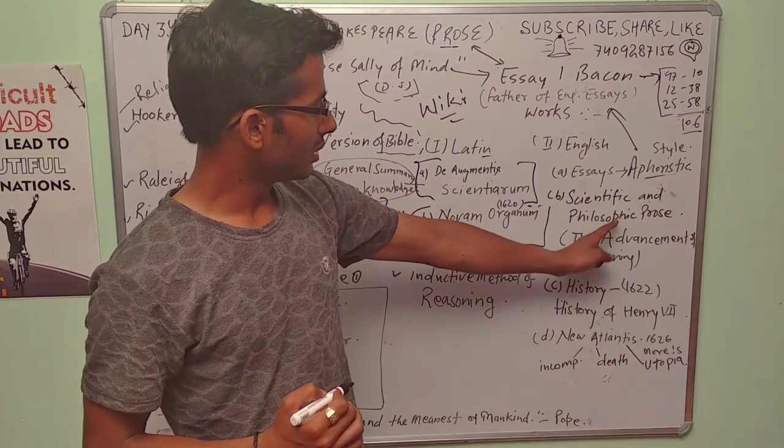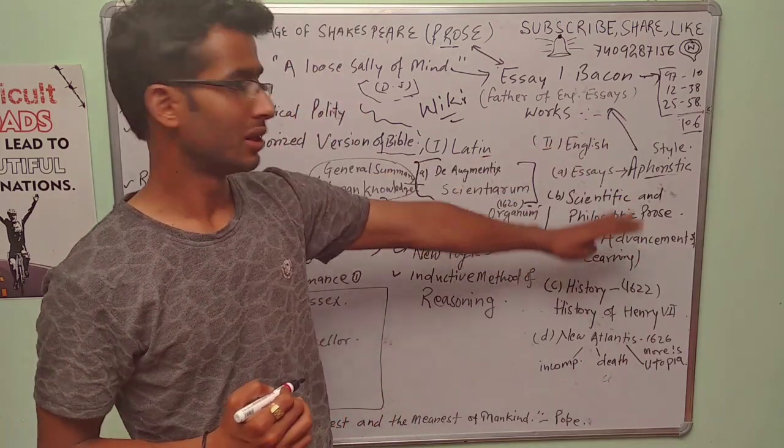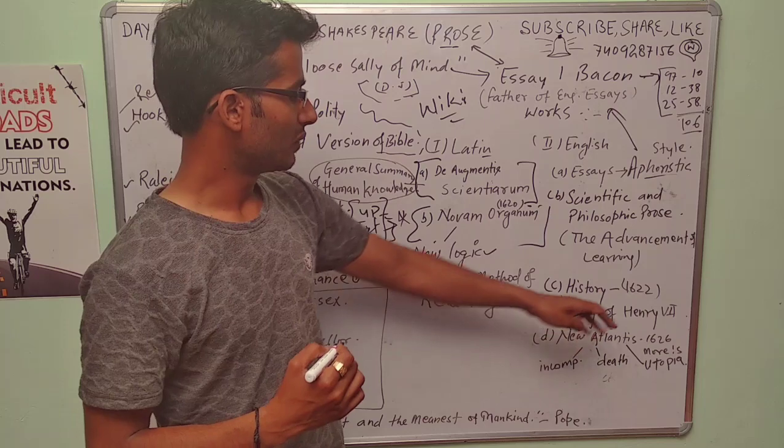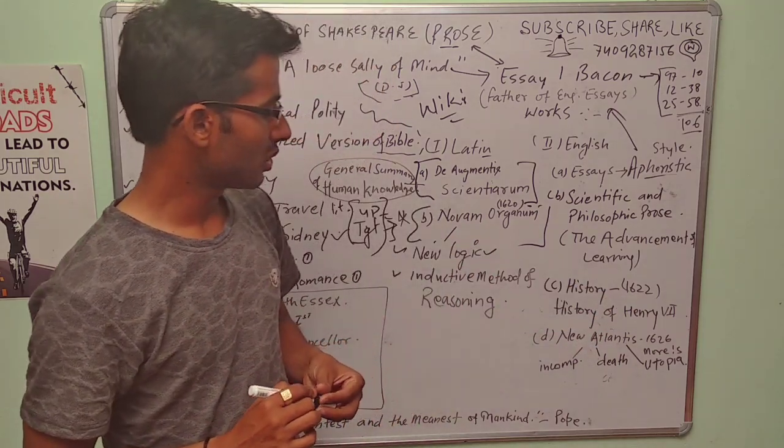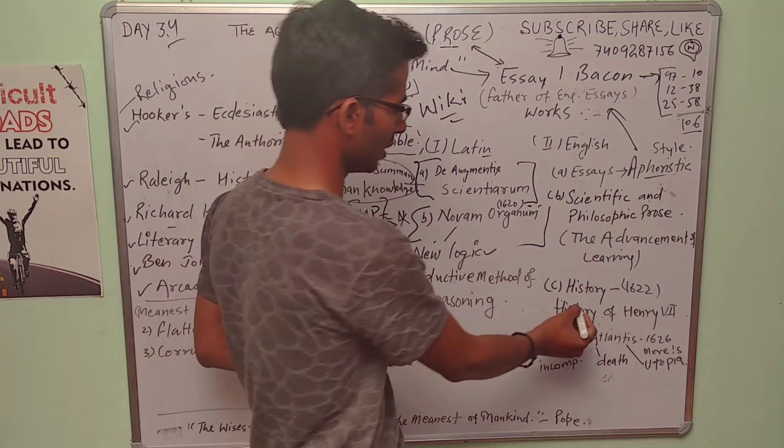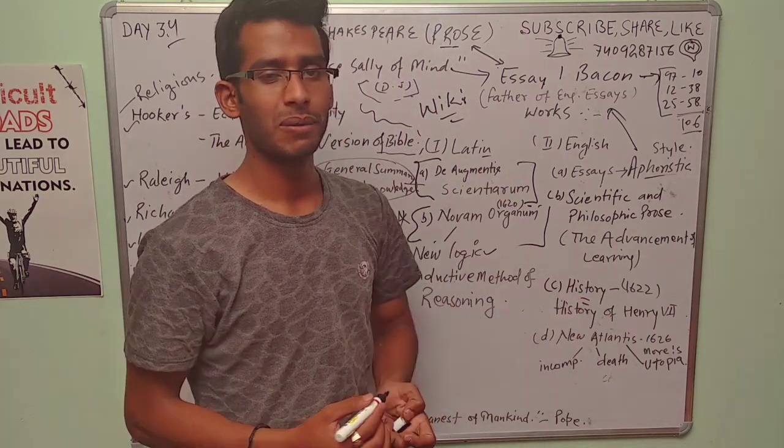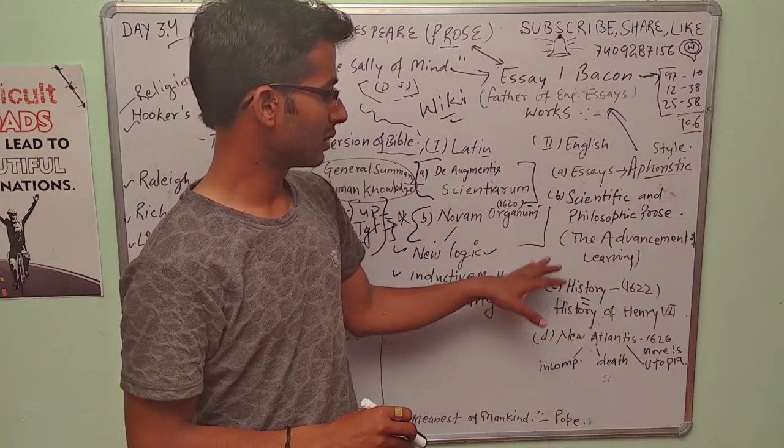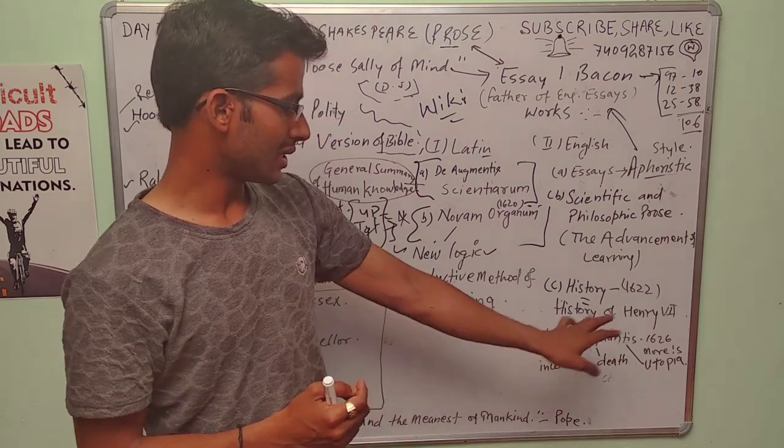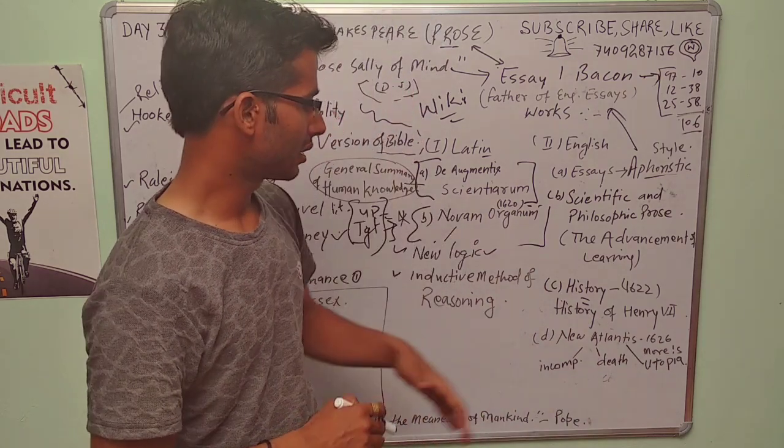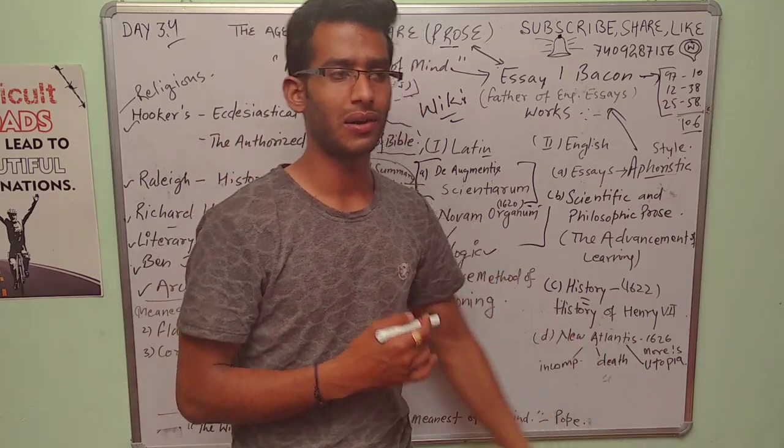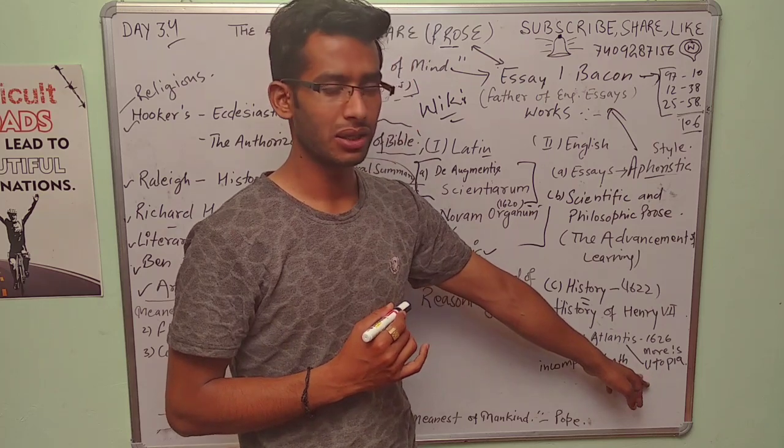Scientific and philosophic prose—The Advancement of Learning was the title of his work. Next one is History, which got published in 1622, and History of Henry VII. This was not particularly history. Bacon called it history, but actually it was flattery, and it was like a biographical work of Henry VII. New Atlantis, his work which got published in 1626, was influenced by More's Utopia.